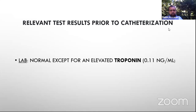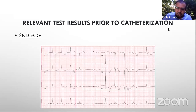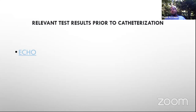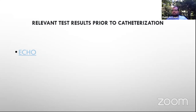Blood work was largely insignificant except for a mildly elevated troponin of 0.11, with our lab cut point at 0.03. We gave the patient sublingual nitroglycerin and his chest pain completely resolved. The trigger was unusual — a Foley catheter insertion — but we were almost 100% certain this was ischemic. The patient was chest pain free, and we decided to obtain an echo as soon as possible.